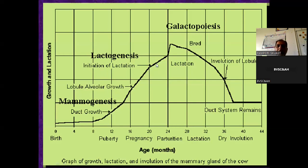Once there is parturition and birth, lactation begins - that is stage second of lactogenesis, with copious secretion of milk from mammary glands. This lactation continues till the animal dries up. The whole period from parturition or delivery to the dry period is the lactation cycle. During this period, the animal produces milk and the quantity depends on how you manage it and the different practices on the farm.